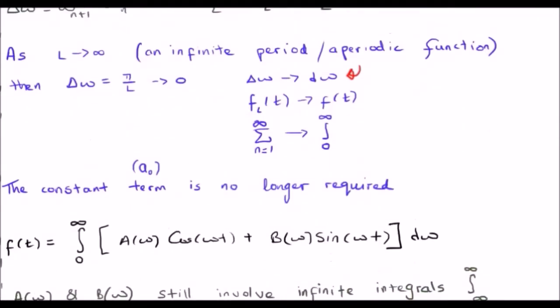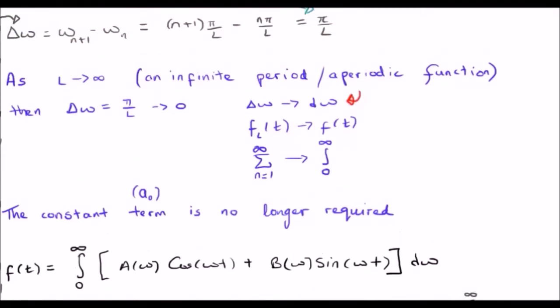The a₀ term just falls out - it's no longer required. What we're left with is as follows. We still have f(t), but this time it's a continuous f(t). There's no subscript L saying it's discrete. We have the integral from zero to infinity, and we have our cosines and sines with respect to omega, integrated with respect to the continuous variable omega.